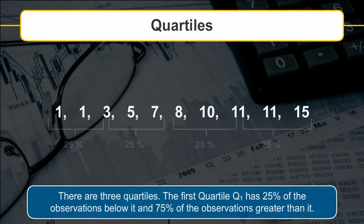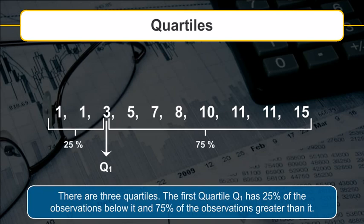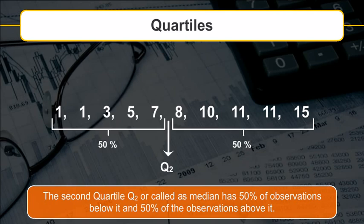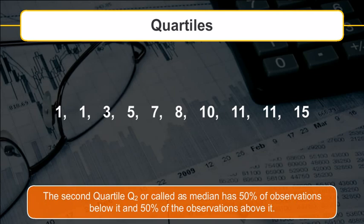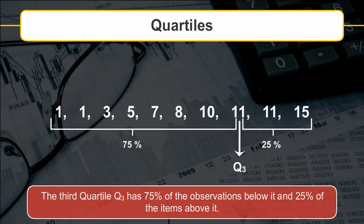Quartiles divide data into four equal parts, each containing an equal number of observations. There are three quartiles: Q1 has 25% of observations below it and 75% above it; Q2, also called the median, has 50% of observations below and 50% above it; Q3 has 75% of observations below it and 25% above it.